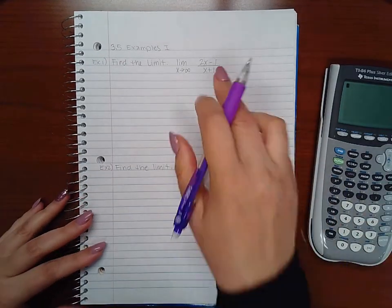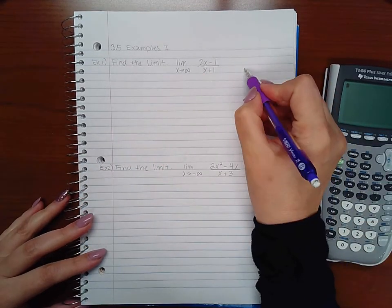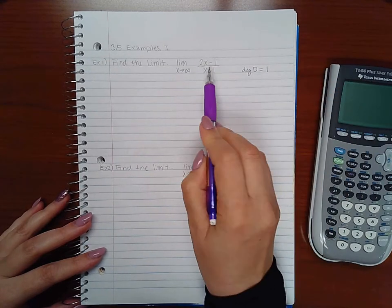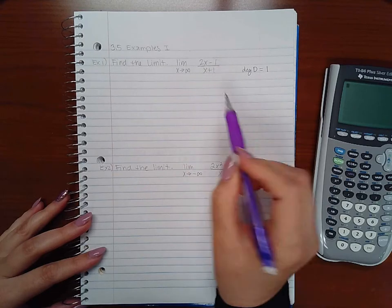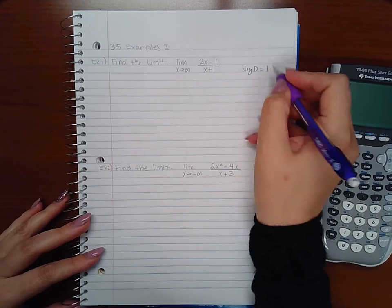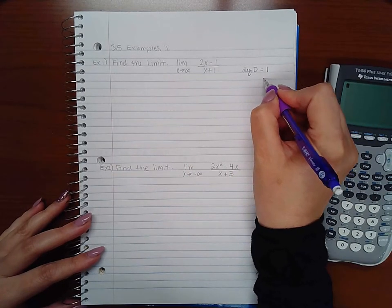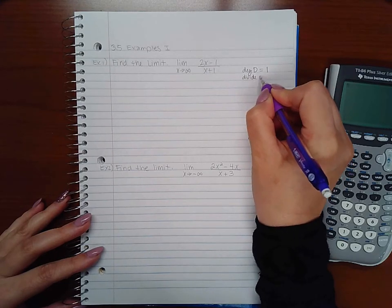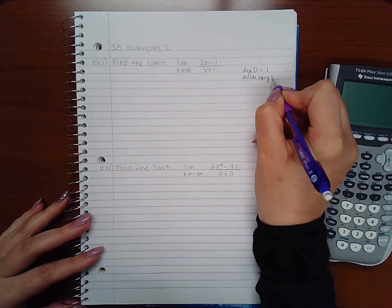Find the degree of the denominator. The degree of the denominator is actually equal to 1 because that's the highest exponent on our variables. So what that means is I'm going to divide every term in both the numerator and denominator by x to the power 1, or just x.